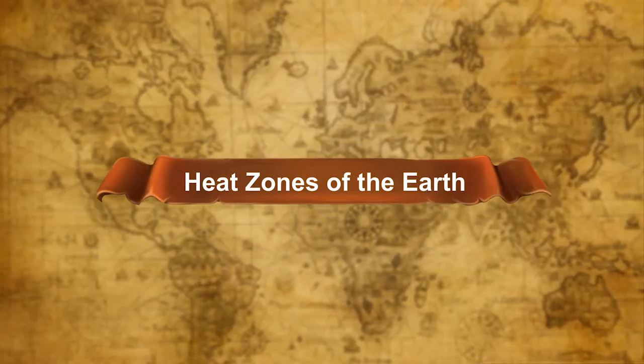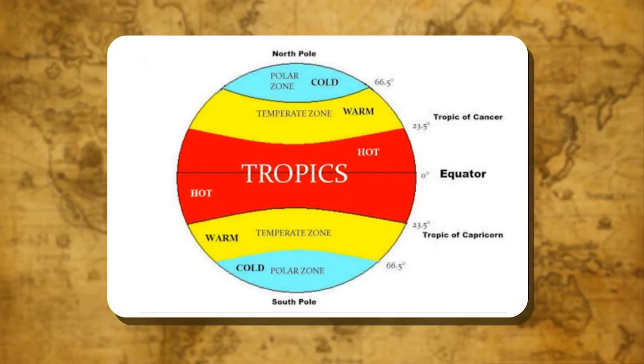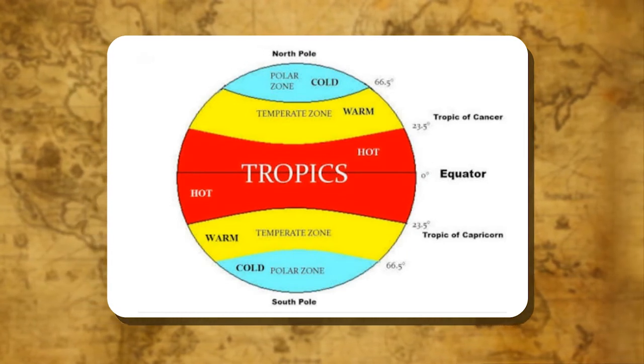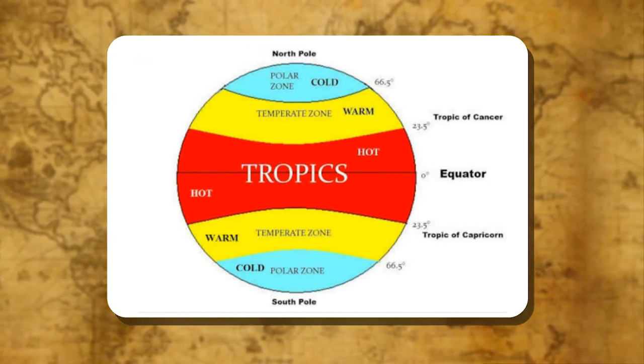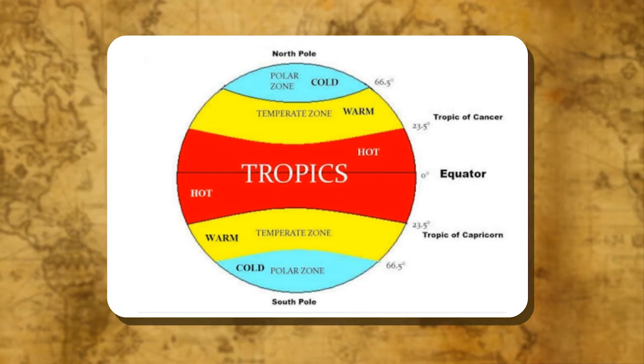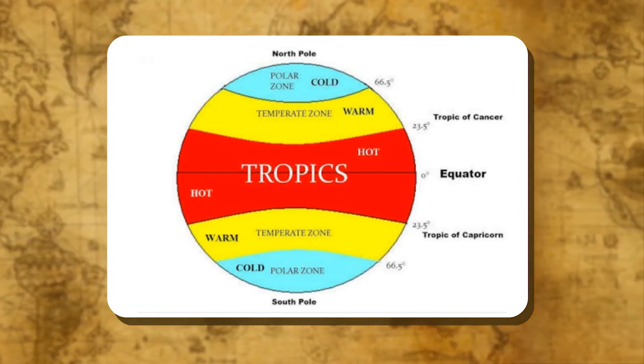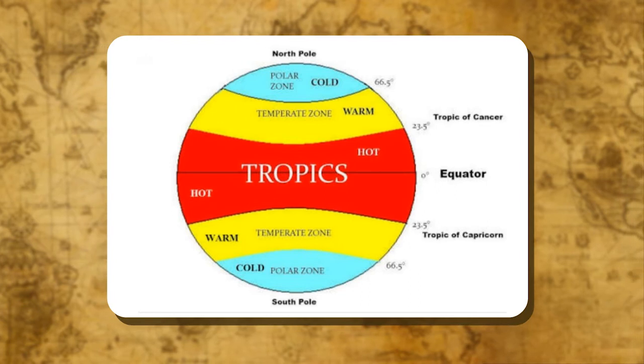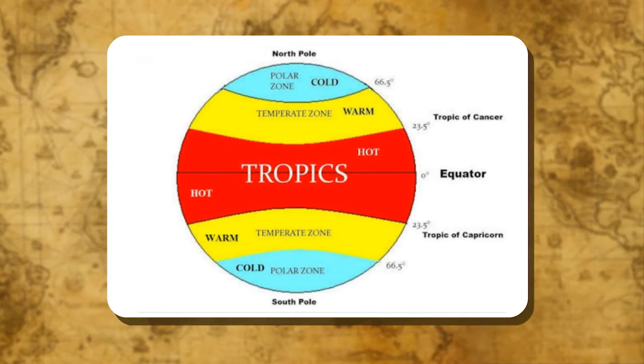Heat Zones of the Earth: We can divide the earth into three types of zones on the basis of the heat received from the sun. Each of these zones is bounded by imaginary lines that extend around the earth on both sides of the equator.